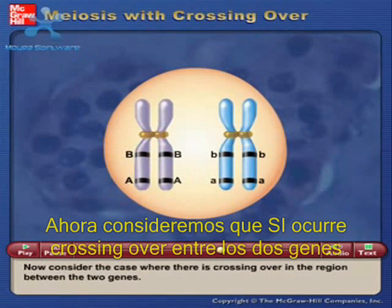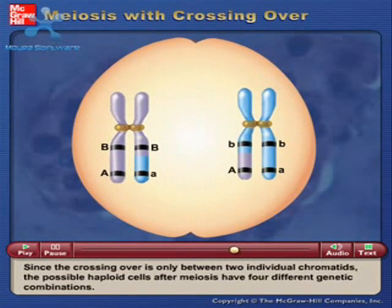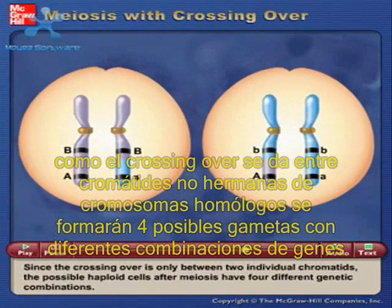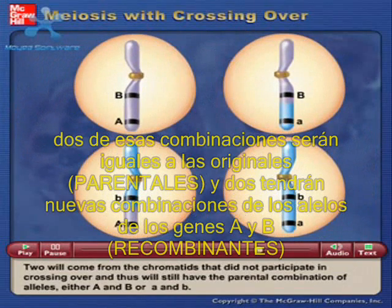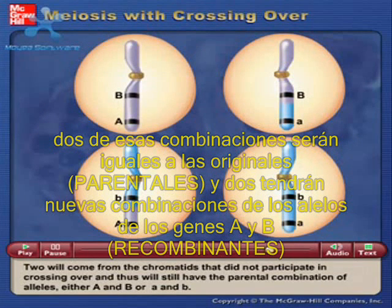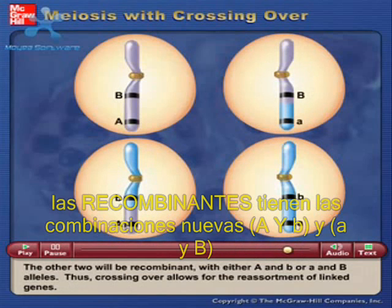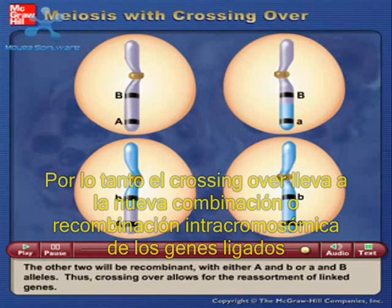Now consider the case where there is crossing over in the region between the two genes. Since the crossing over is only between two individual chromatids, the possible haploid cells after meiosis have four different genetic combinations. Two will come from the chromatids that did not participate in crossing over and will still have the parental combination of alleles — either capital A and capital B, or lowercase a and lowercase b. The other two will be recombinant, with either capital A and lowercase b, or lowercase a and capital B alleles. Thus, crossing over allows for the reassortment of linked genes.